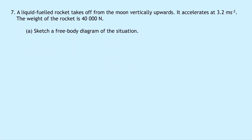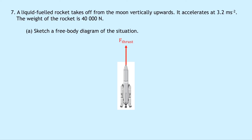Question seven says a liquid-fueled rocket takes off from the moon vertically upwards, accelerating at 3.2 meters per second squared. The weight of the rocket is 40,000 Newtons. Part A asks to sketch a free body diagram. Because the motion is vertical, there are no horizontal forces. We draw a thrust force upward and a weight of 40,000 Newtons downward. There are no friction or air resistance forces given in the question.